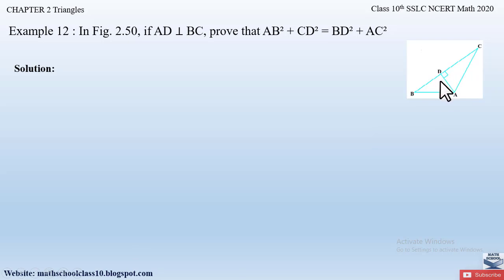Since AD is perpendicular to base BC, it forms a right angle on both sides — this is a 90-degree angle. Similarly, both sides of the perpendicular form a 90-degree angle; let us name these as angle 1 and angle 2. Therefore, triangle ABD and triangle ADC both form right-angle triangles.